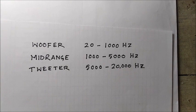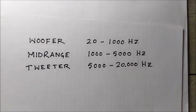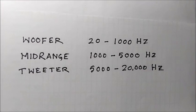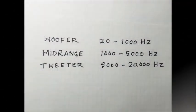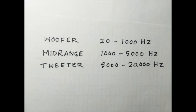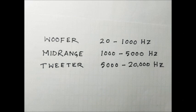In a three-way network the audio frequency output from the amplifier is divided into three parts: woofer 20 to 1000 cycles, mid-range 1000 to 5000 cycles, and tweeter from 5000 to 20000 cycles. In general, a mid-range speaker mostly covers the frequency band between 500 Hz to 5 kHz.